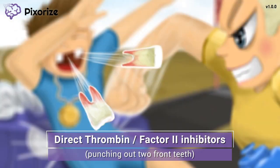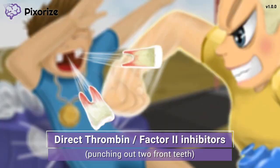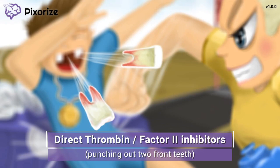Do you see her punching out his two front teeth? These two front teeth should make you think of factor 2. Factor 2, also known as thrombin, is a member of the coagulation cascade responsible for forming blood clots. Therefore, these two front teeth getting punched out is our symbol for an inhibition of factor 2, inhibiting the function of thrombin in forming clots.